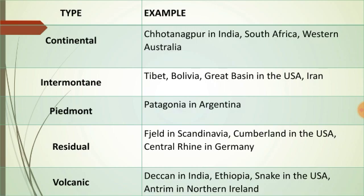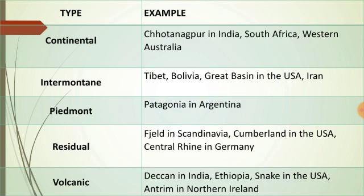Here is a table showing types and examples. Continental plateaus include Chotanagpur in India, South Africa, and Western Australia. Inter-mountain plateaus include Tibet, Bolivia, the Great Basin in the USA, and Iran. Piedmont plateaus include Patagonia in Argentina. Residual plateaus include Fjeld in Scandinavia, Cumberland in the USA, and Central Rhine in Germany.